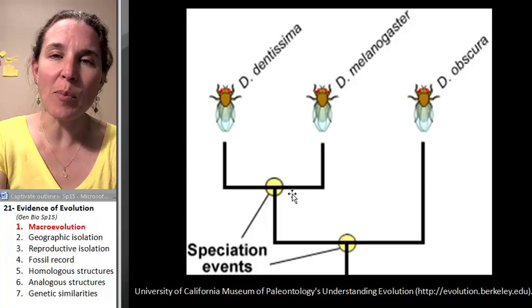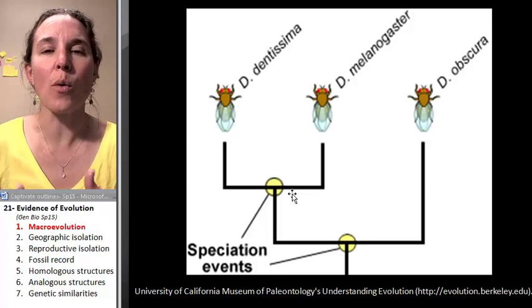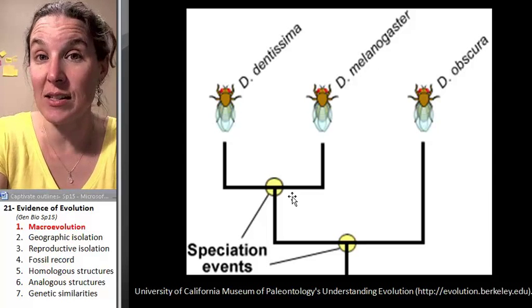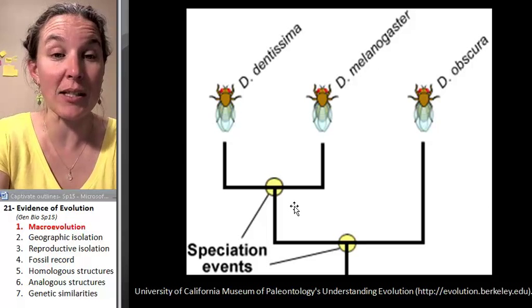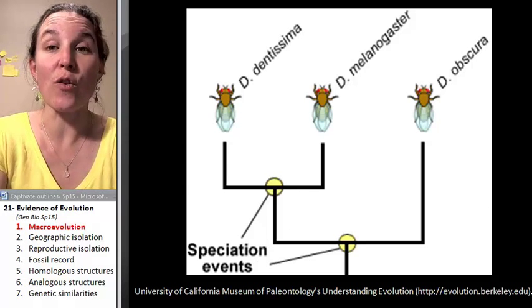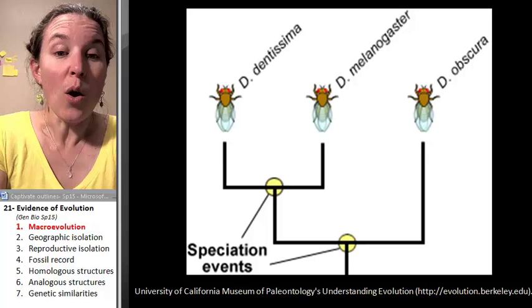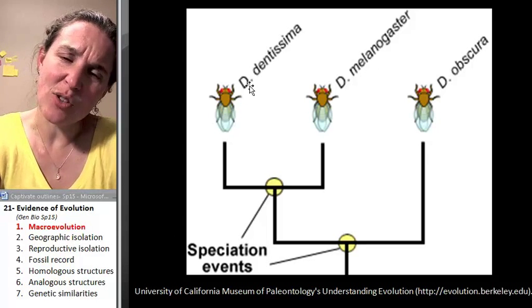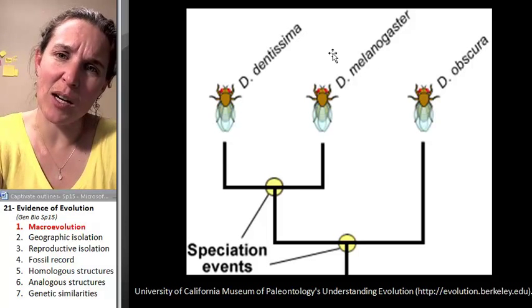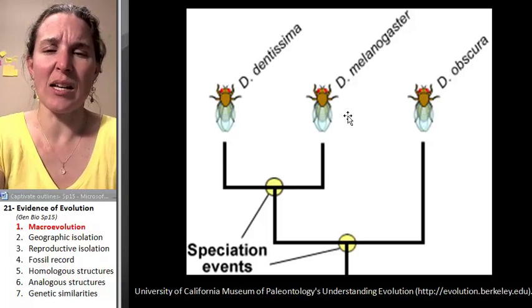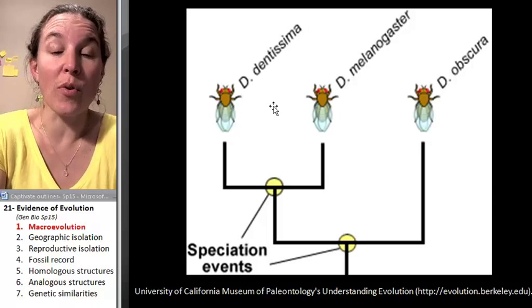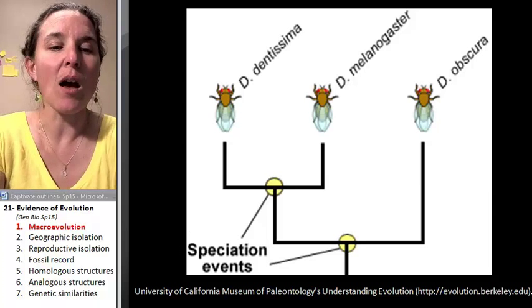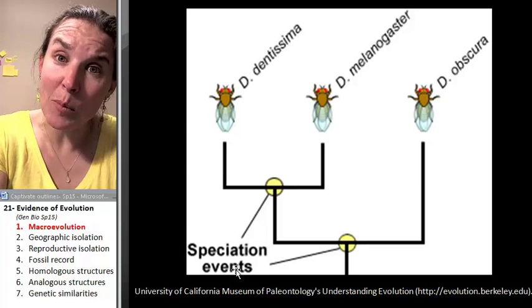So we've got a couple of pieces where we're going to look at the mechanism of speciation, and then we're going to start looking at the evidence that speciation has taken place in the past. The first thing we have to talk about is: what starts speciation? Why did the Drosophila dentissima decide to become a separate species? What happened to branch dentissima off from melanogaster? Why did that speciation event take place?